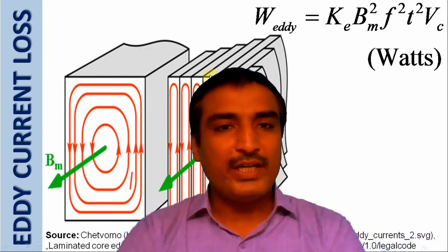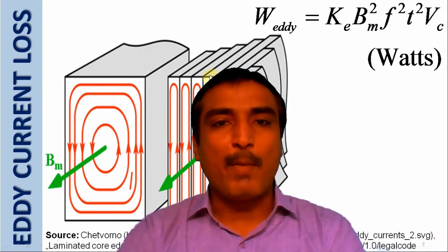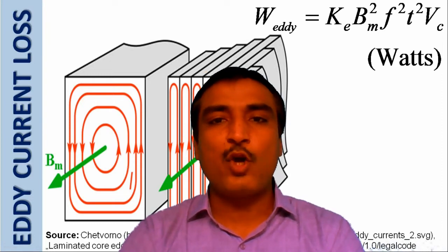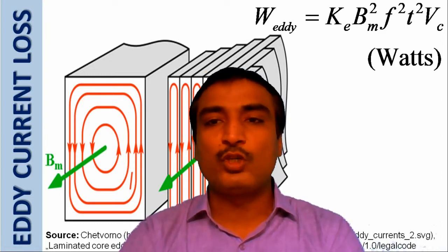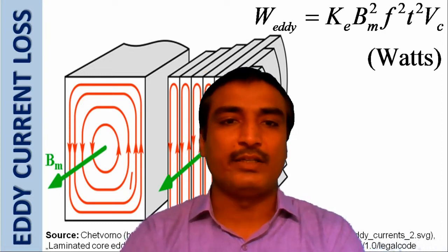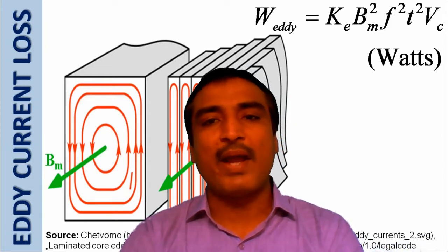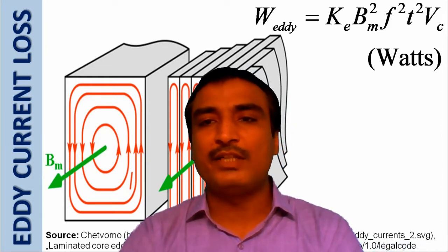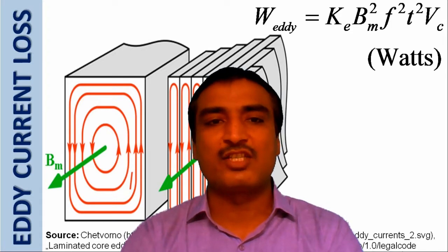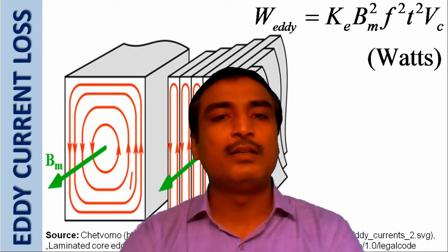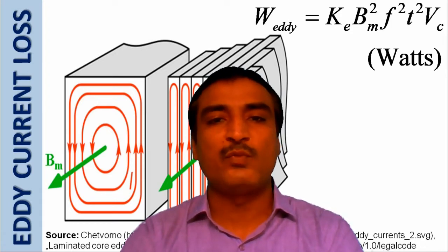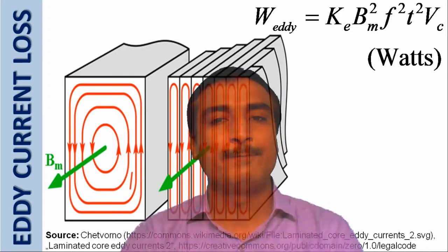In reality, the mechanism of core losses is very complex and it is not possible to compute its value accurately. However, if the flux density of the magnetic field and the speed of the DC machine remain constant, the core losses will also remain constant.